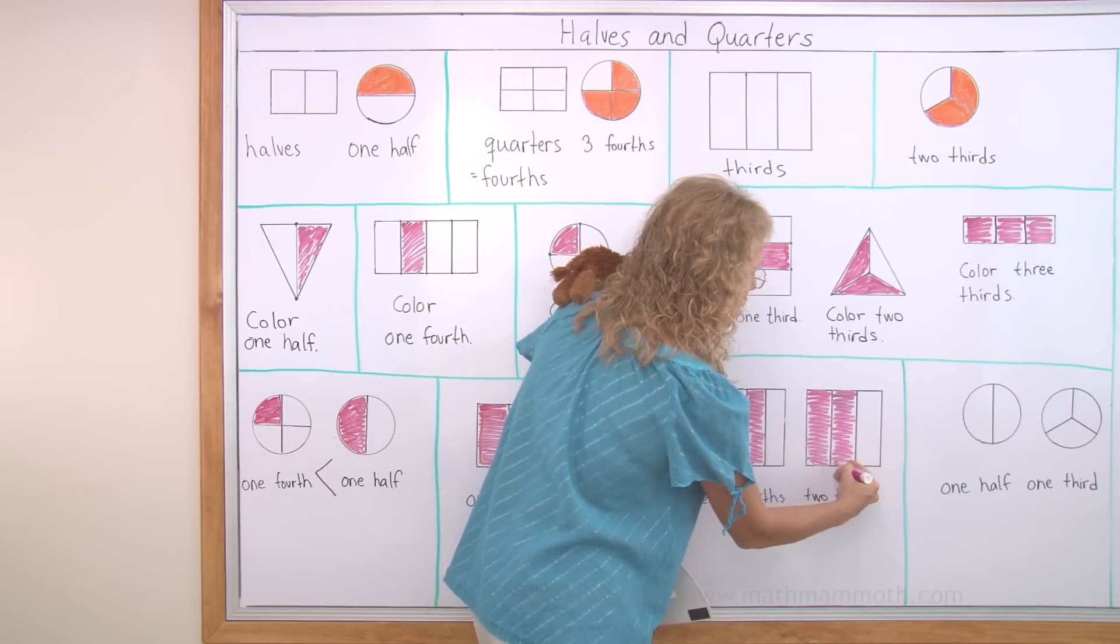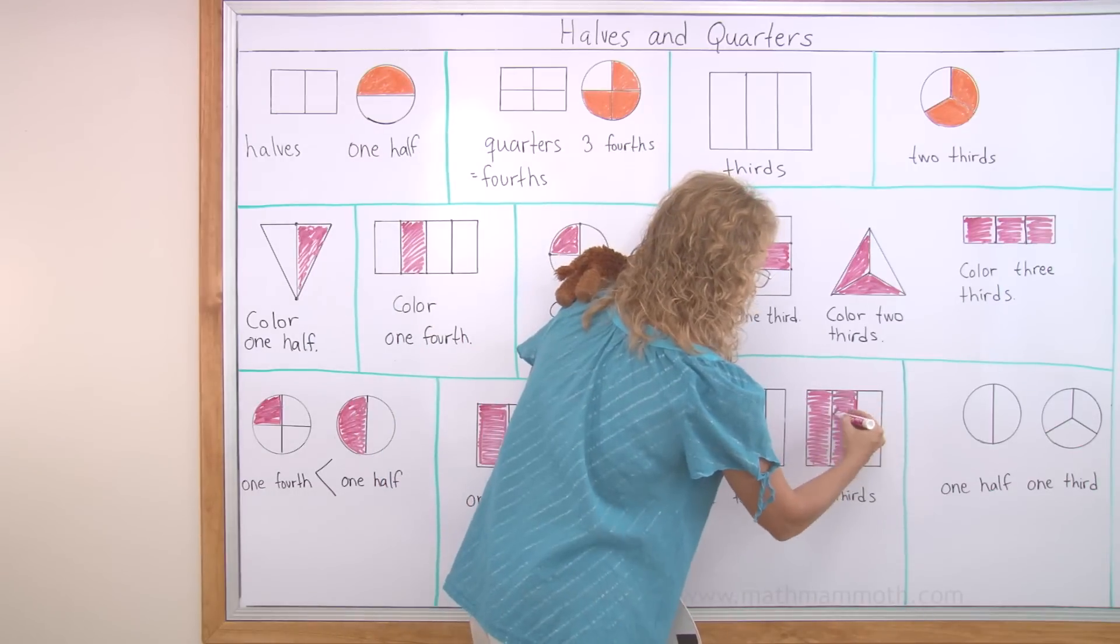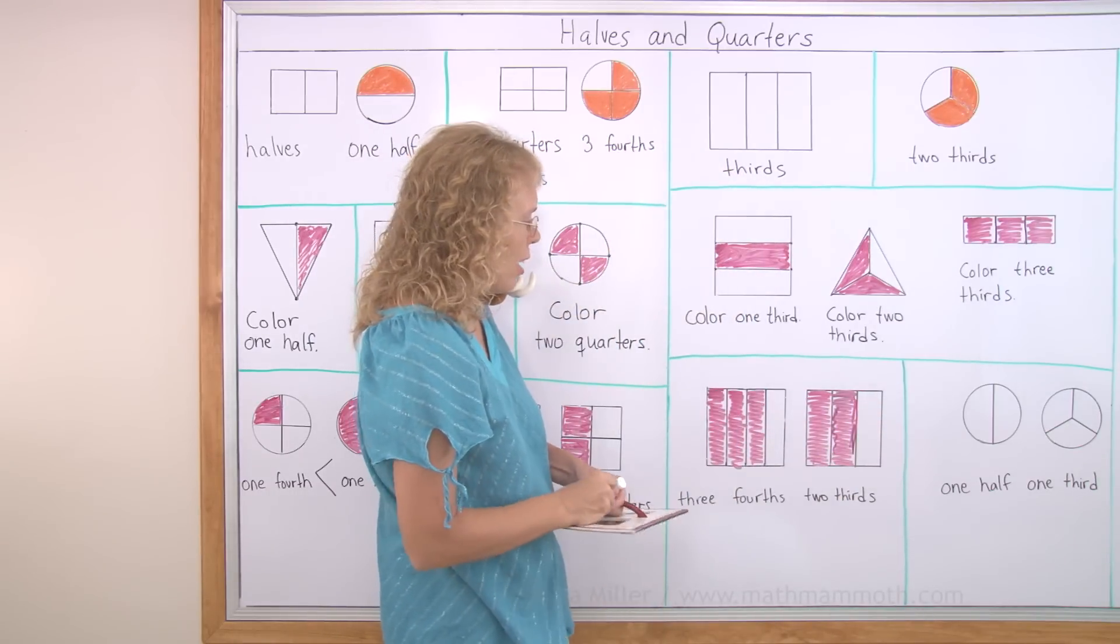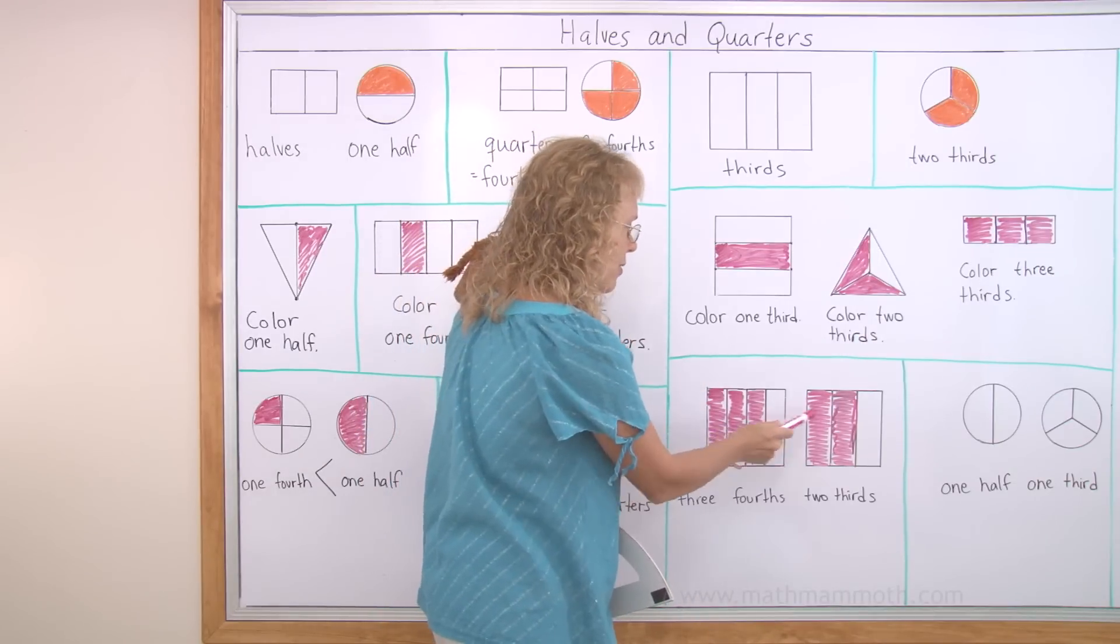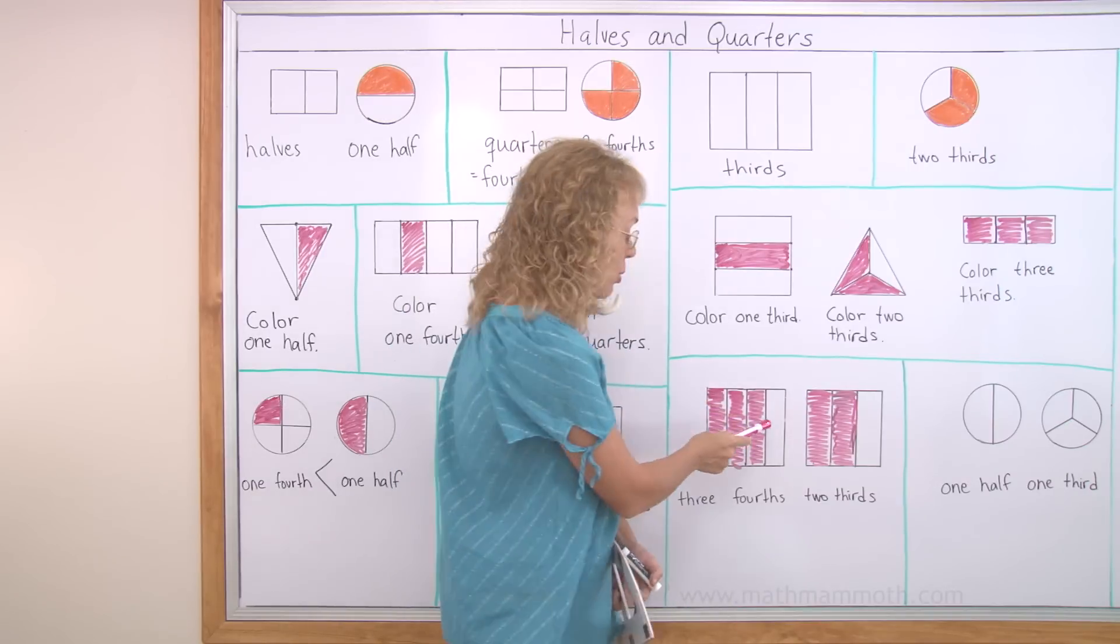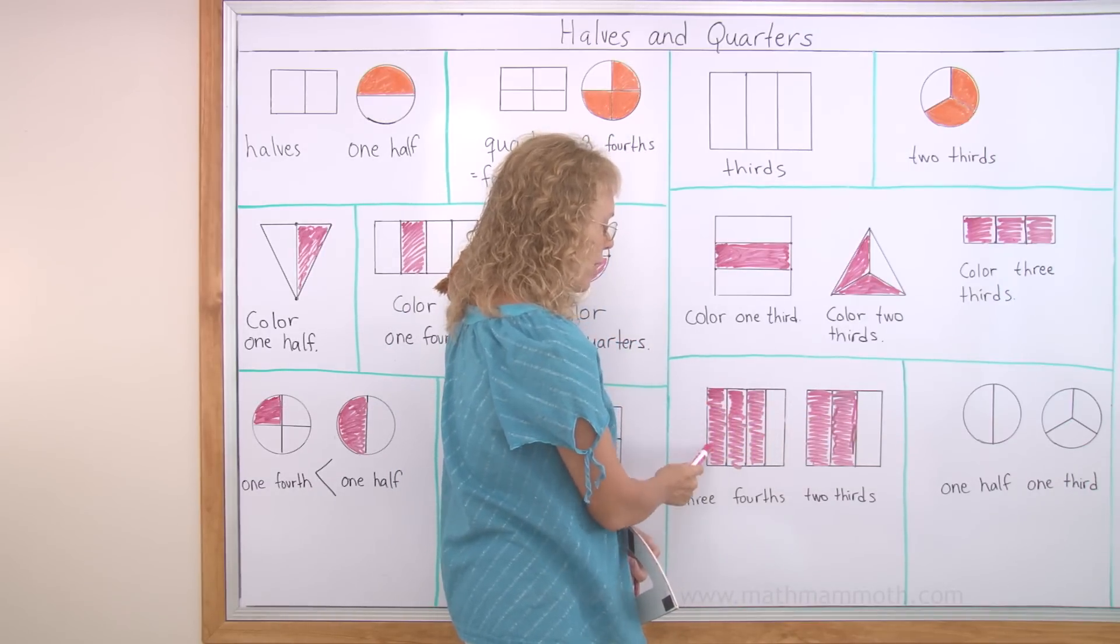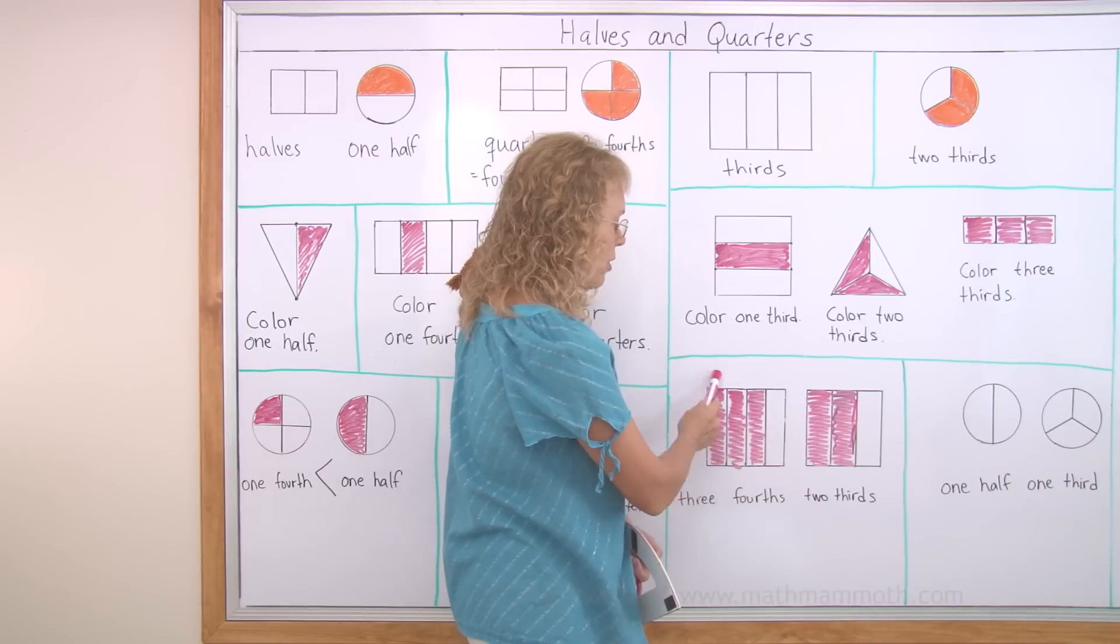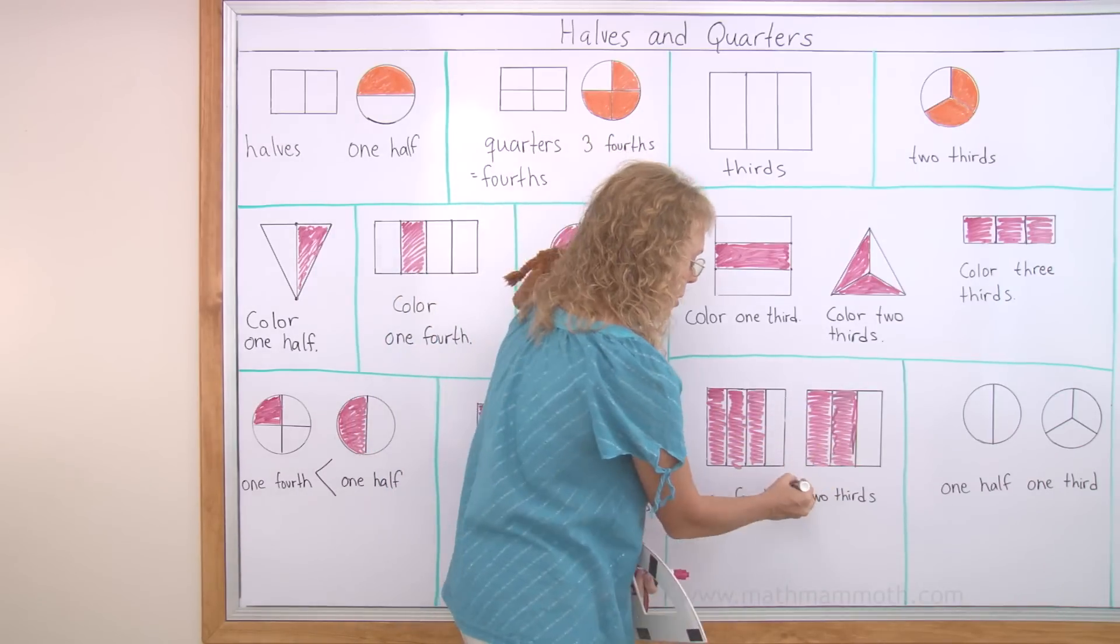Can you tell which is more? Three fourths or two thirds? Well, how about if you think of it this way. The part that is not colored, over here, the part that is not colored is smaller here than here, right? So therefore this part that is colored must be more here or greater here than here. So three fourths is the greater amount.